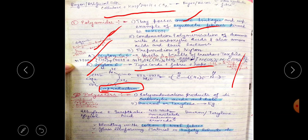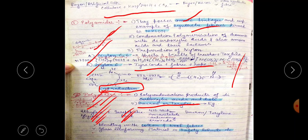Polyesters are mostly artificial, co-polymers, and biodegradable — formed by condensation reaction. The two important examples to remember are Dacron and Terylene — a direct question can be asked. Dacron is made from ethylene glycol and terephthalic acid. It is used for blending with cotton or wool fibers, and also as glass reinforcement material in safety helmets.